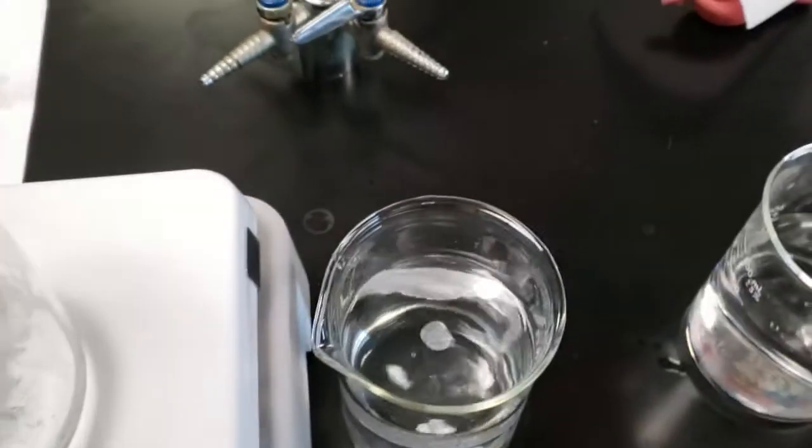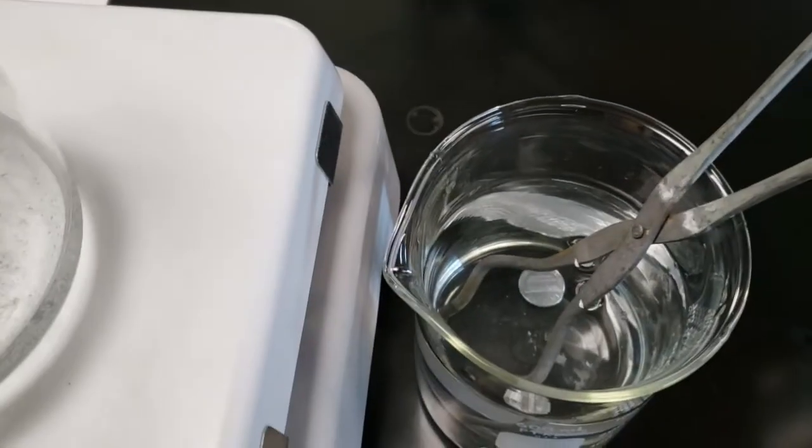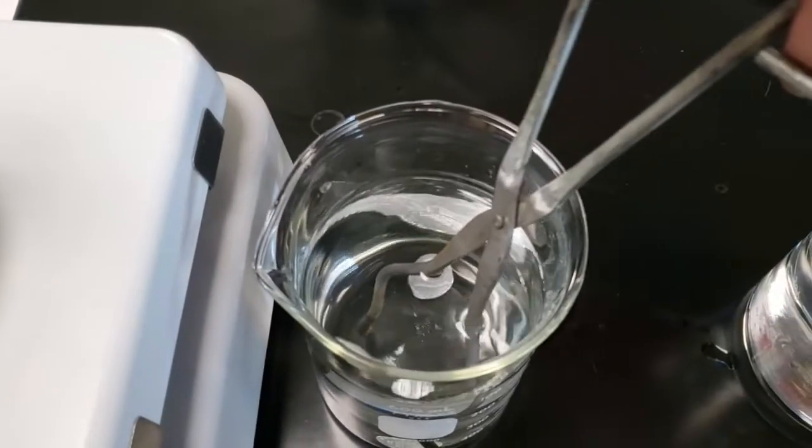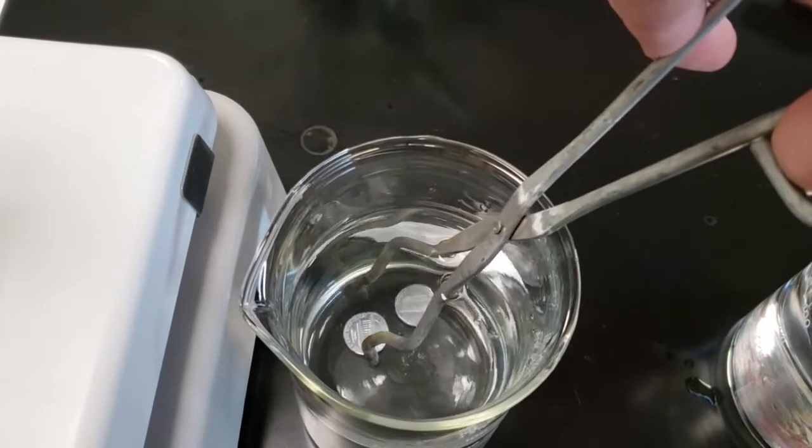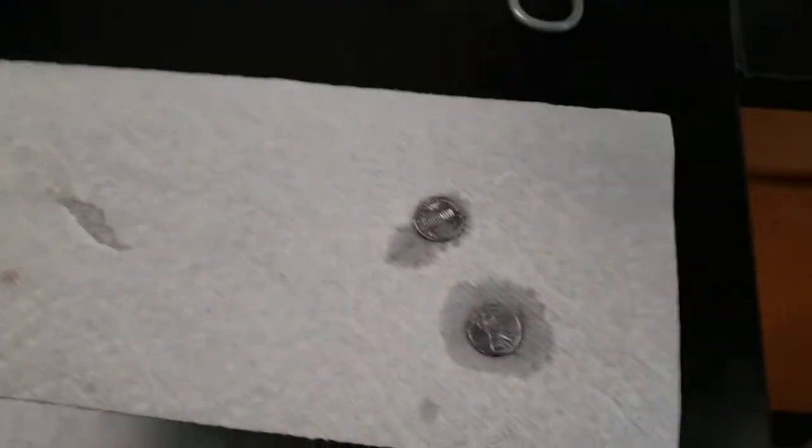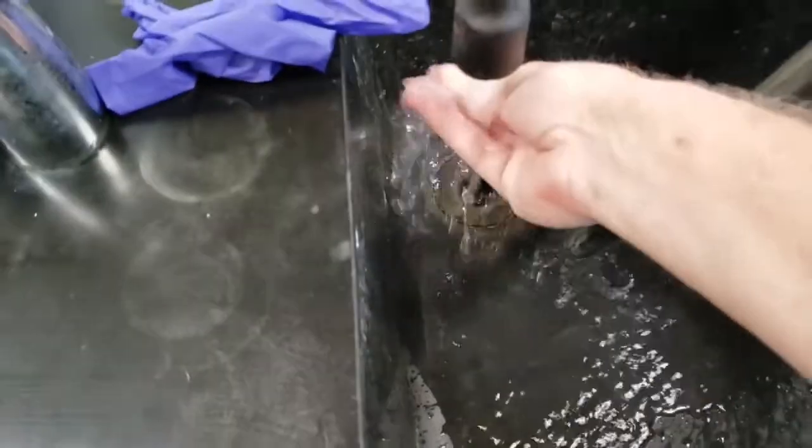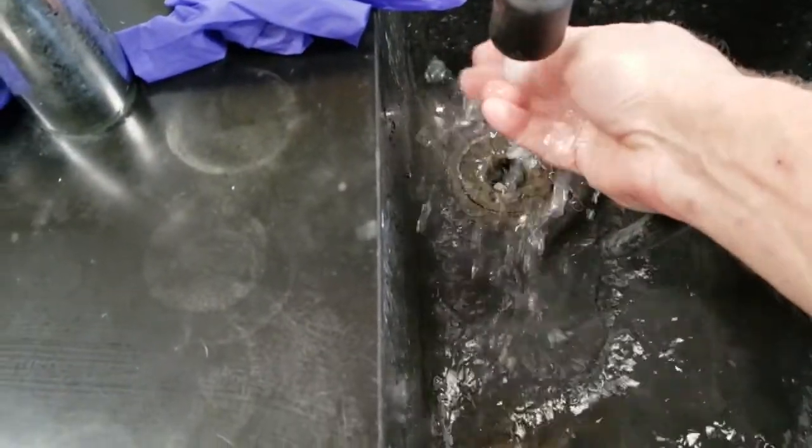Then we're gonna take it out. First of all, it's not gonna be hot anymore, this is just room temperature water. We're gonna take it out and bring it over to the faucet and rinse it off. See, they look silver. A little running water going.